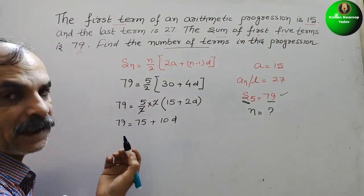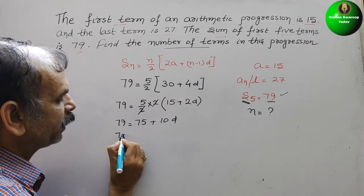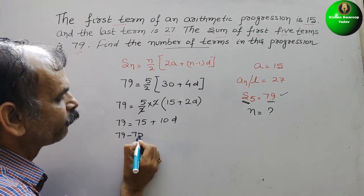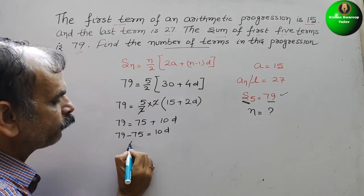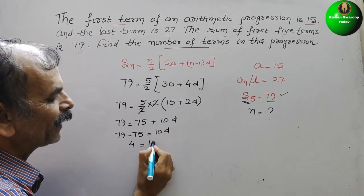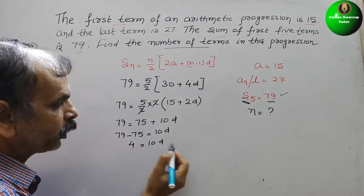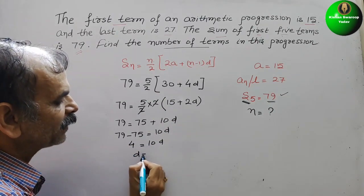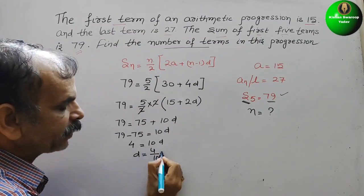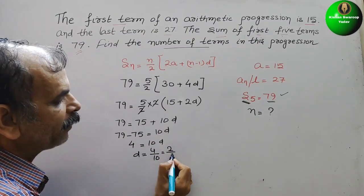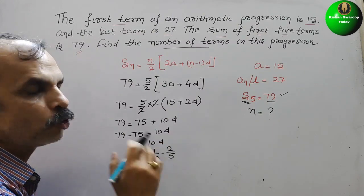Bring 75 to this side, so it will be 79 minus 75, that is equal to 10D. So this is 4, 4 is equal to 10D. So D is 4 by 10, that is 2 by 5. So D is 2 by 5.